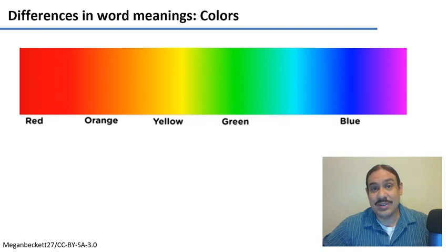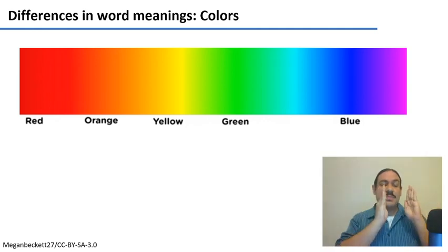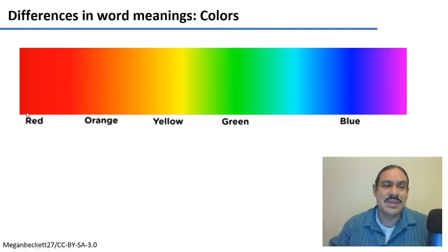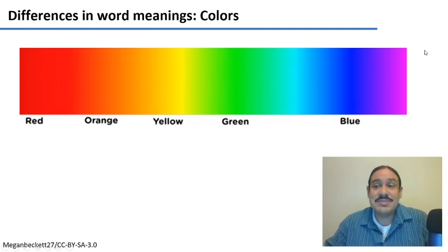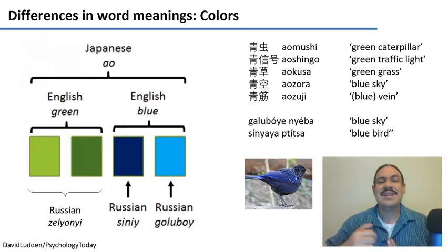We have the very interesting case of colors. Colors are a physical continuum that we split into arbitrary divisions. For example, English splits colors into something we call red or something we call blue, and all those different shades are conceptualized as different shades of blue. Languages may make arbitrary cuts in different ways. In Japanese, all of these colors would be subsumed into a single color called 'ao,' which is a blue-green or green-blue — it's actually called 'grue' in psycholinguistics because it's a combination of green and blue.